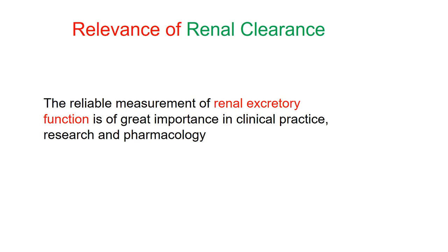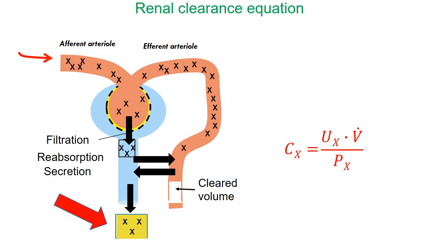Renal clearance is a reliable measurement of renal excretory function, and it is of great importance in clinical practice, research, and pharmacology. Clearance could simply be defined as the amount of a substance excreted in the urine per minute, but this would tell us nothing about the role of the kidney in the process. The urine used to calculate the excretory rate is taken from a point when it is no longer modified by the body, and therefore the clearance of substance X can tell us everything about the function of the kidney itself.